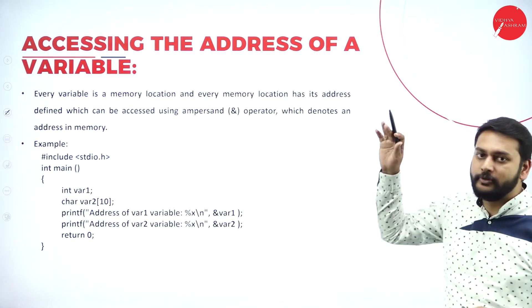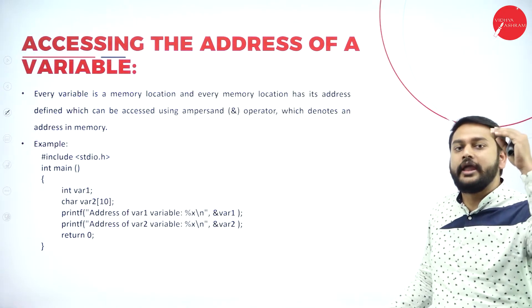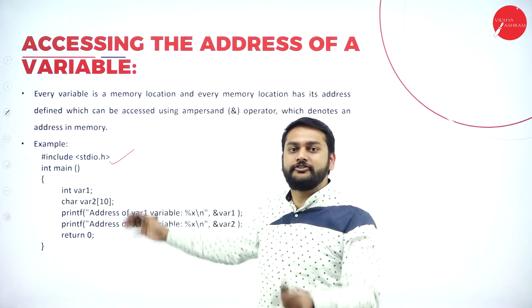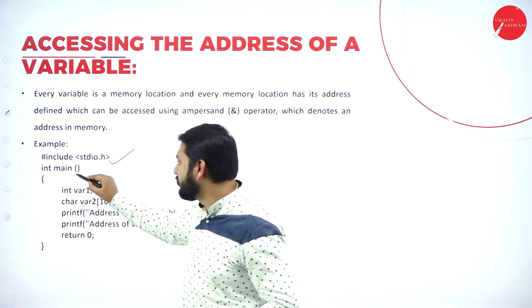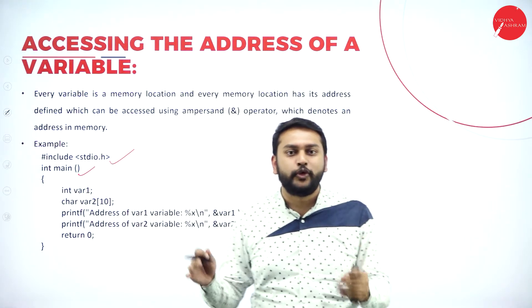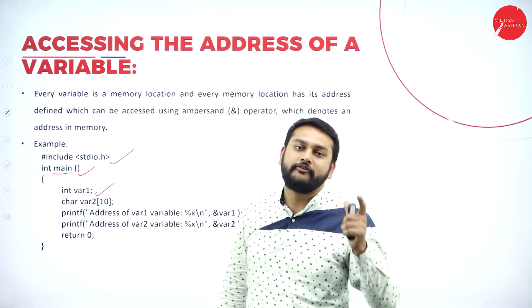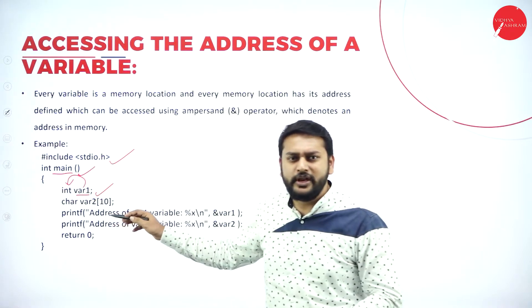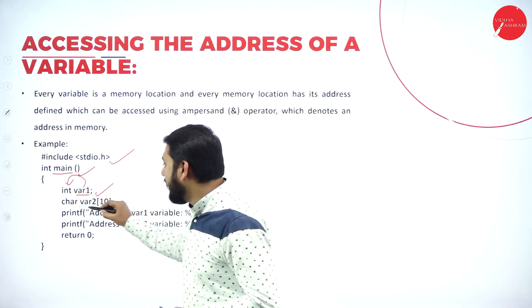Let me show you a program to demonstrate how to access the address of a variable. I have hash include stdio.h as the header file, then the main function where execution starts. I have declared a normal integer variable called variable_one — please observe it is a normal variable.